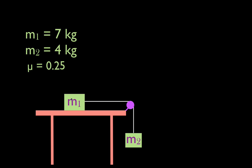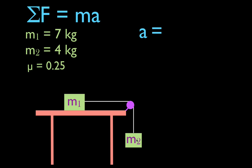When we release M1, it's going to accelerate to the right, and M2 is going to accelerate down. We want to know the acceleration of M1 and M2, and also the tension in the string connecting them. To do that, we're going to use Newton's second law: the sum of the forces equals the mass times the acceleration, so acceleration equals the sum of forces divided by the mass.